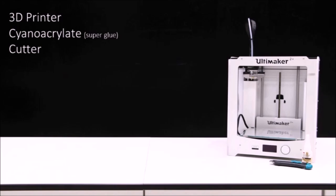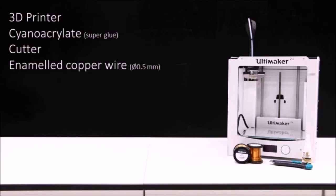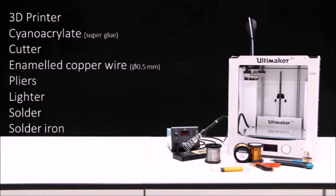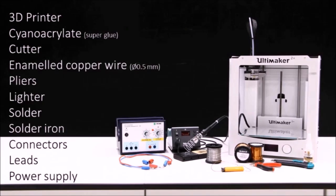A cutter or some tool to help remove the support structures of the prints. At least 500 meters of copper wire with diameter of half a millimeter. Pliers to handle and cut the wire. We have also used the lighter together with some thick wire to drill some holes in the coil frames to make the coils. Solder and the solder iron to connect the coils together. And completing the model with two connectors allows it to be connected with leads to a power supply.